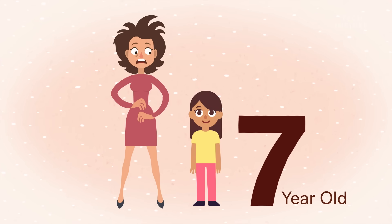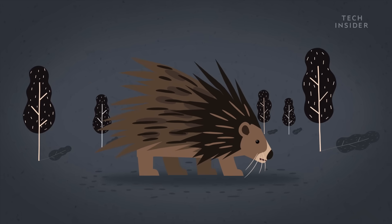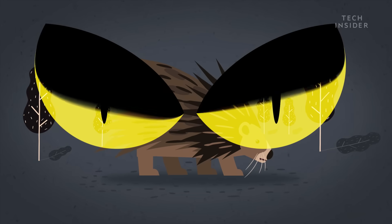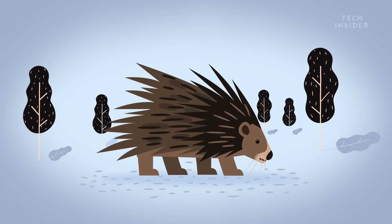But a baby doesn't need to be big to be difficult. Take the porcupine. Those sharp spines protect it from predators, but they're sometimes not so fun for mom.